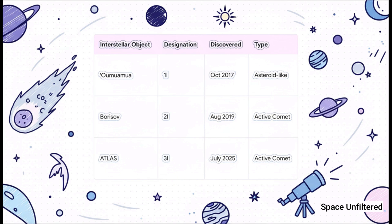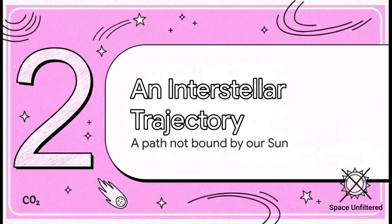However, the second visitor, Borisov, and now 3I Atlas are both active comets. Their outgassing provides a direct sample of their internal ices, something we can actually analyze with our telescopes from Earth.